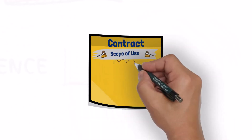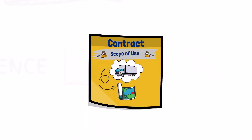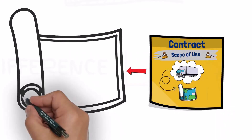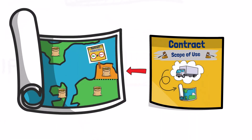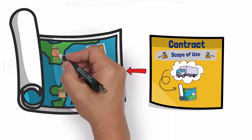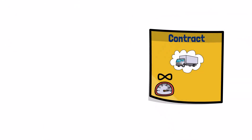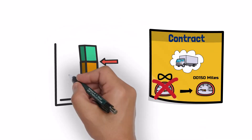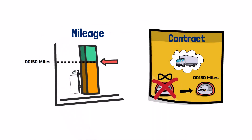For example, if a contract limits the use of a motor vehicle to only one particular territory, an entity shall consider only the economic benefits from the use of the motor vehicle within that territory, and not beyond. Another example: if a contract specifies that a customer can drive a motor vehicle only up to a particular number of miles during the period of use, an entity shall consider only the economic benefits from the use of the motor vehicle for the permitted mileage, and not beyond.